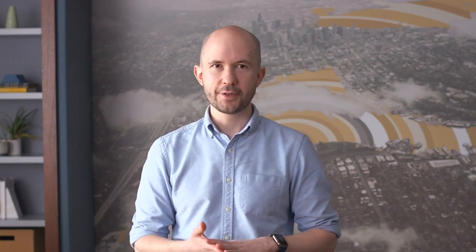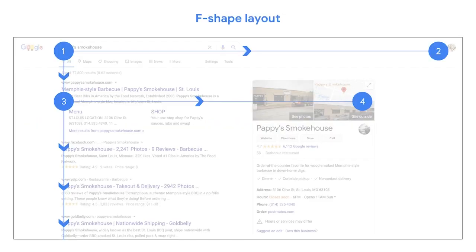F shape layouts mean the pattern users browse content on the page follows the shape of an F. This layout is commonly used to present a lot of material on a single page, allowing users to scan information quickly. It's often used on search result pages, where the user follows the shape of the F as they explore.